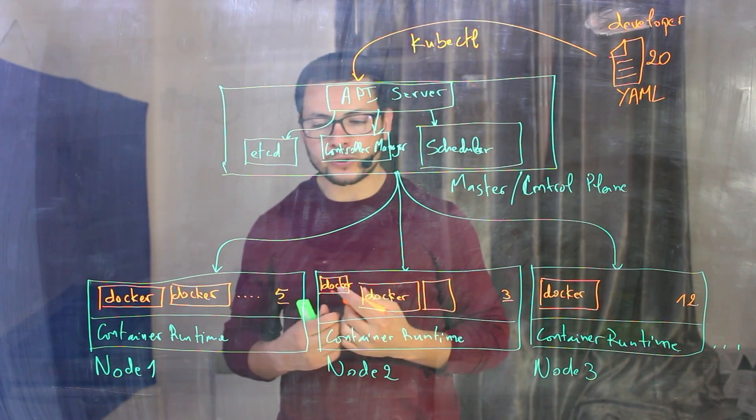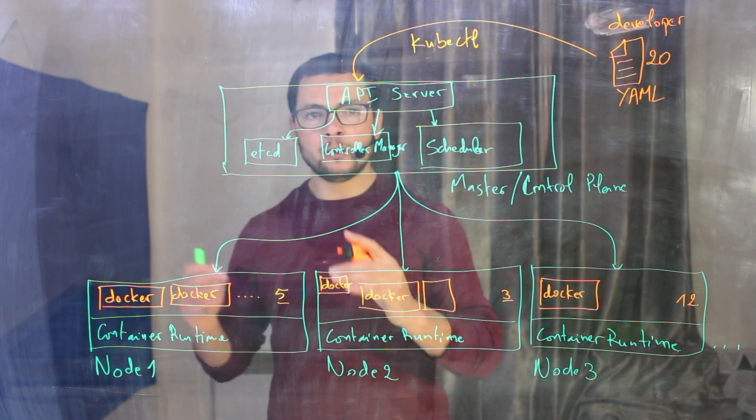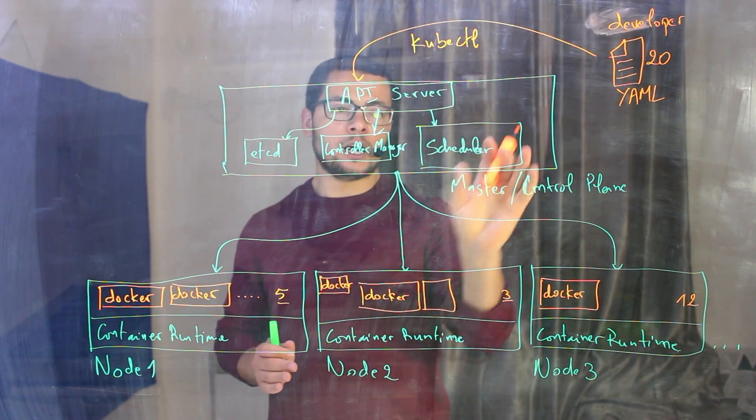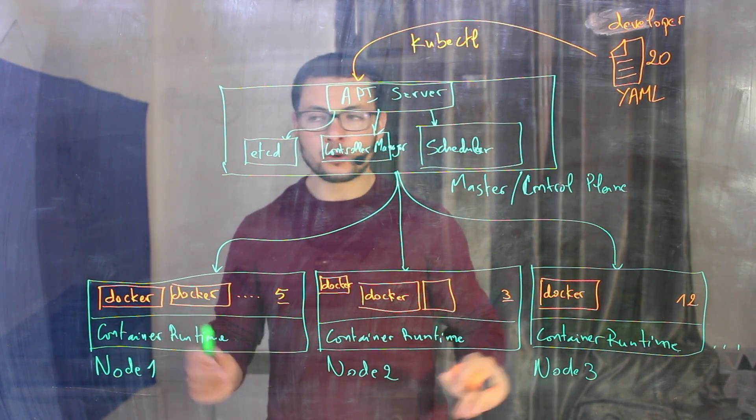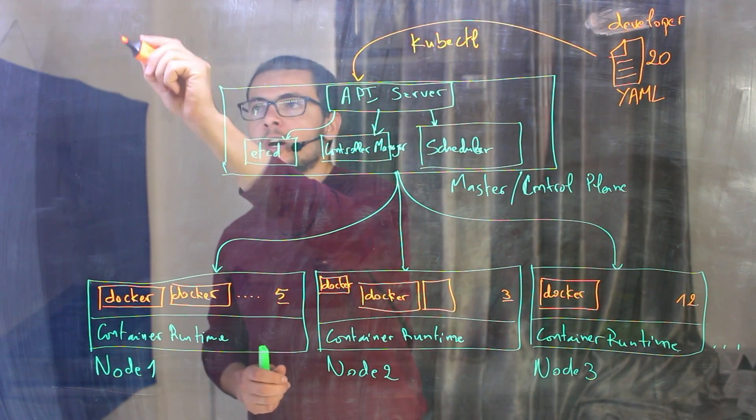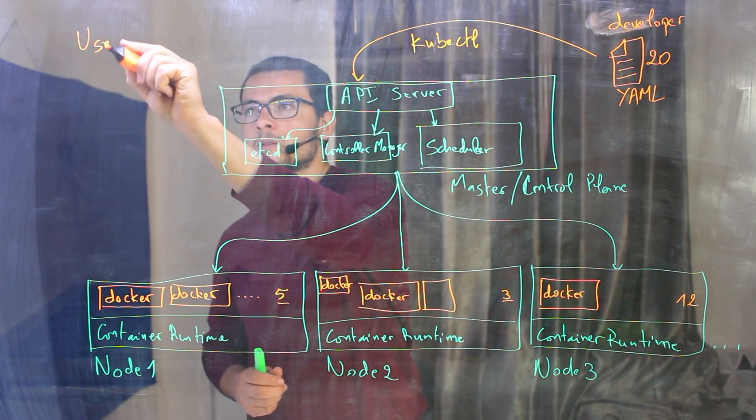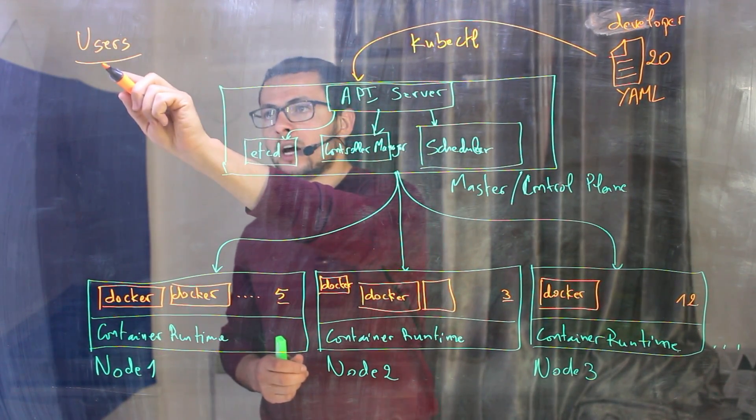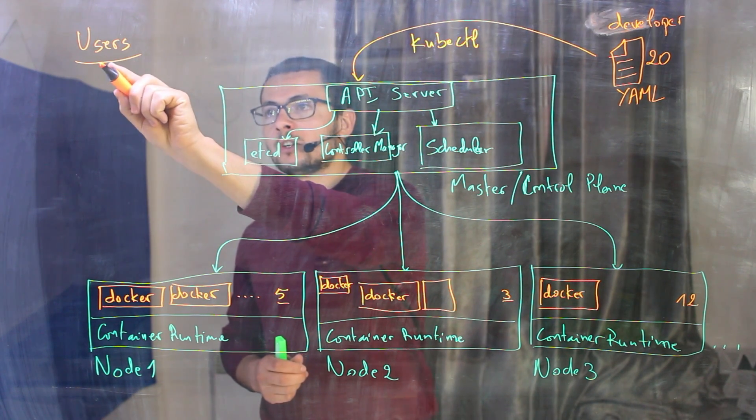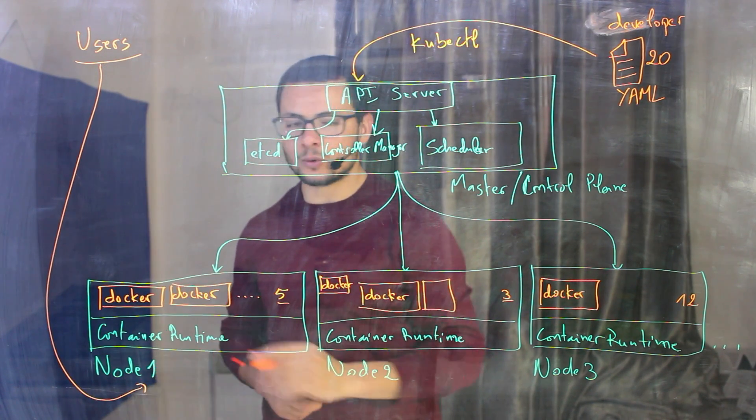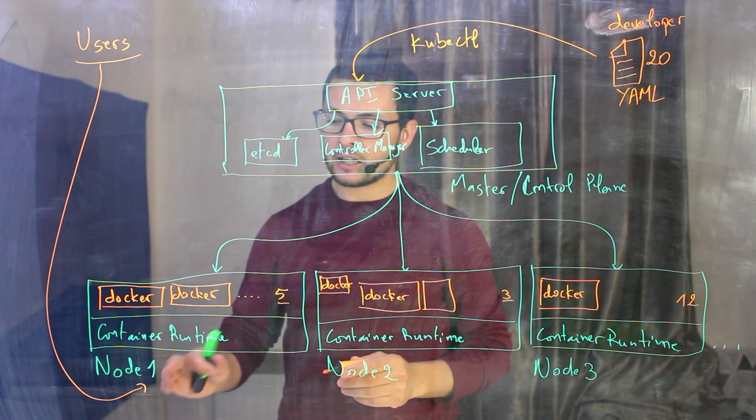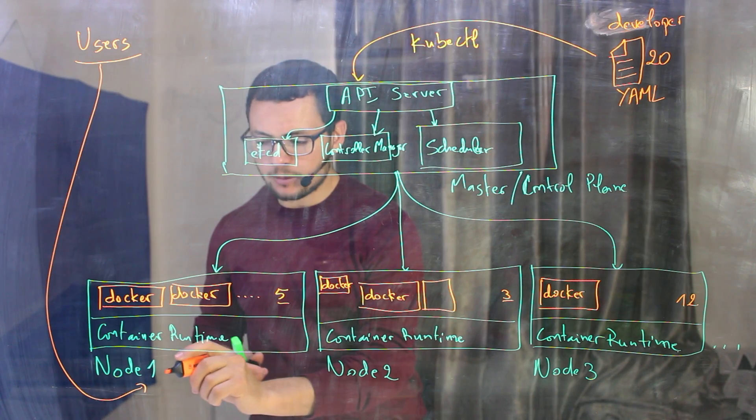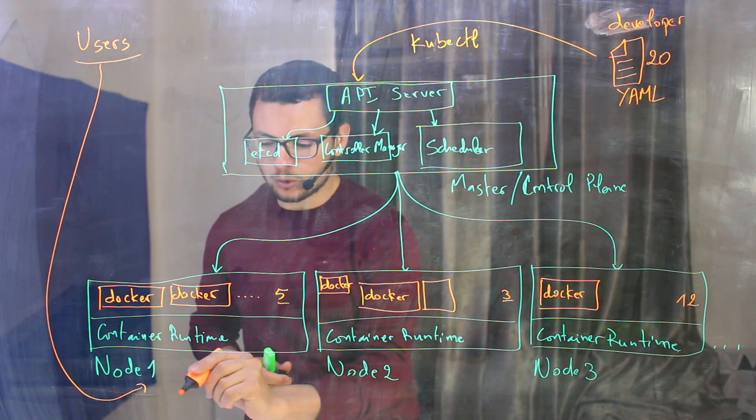Now what about our users who want to connect to my application? My users now will connect to the app, not through the control plane or through the master, but through the worker nodes. So I'll have here our users. They will connect through their browser, the HTTP and so on. And they will be routed to those different nodes. But they won't access directly the node, but they will pass maybe through a load balancer.